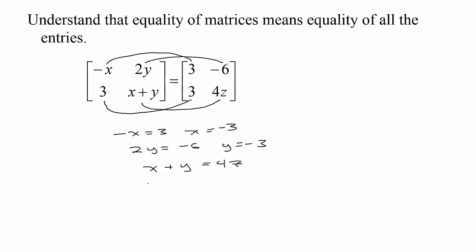Those two 3s are the same, but x plus y has to be 4z. Since x is negative 3 and y is negative 3, that's got to be 4z, so 4z is negative 6, and z would be negative 3/2.